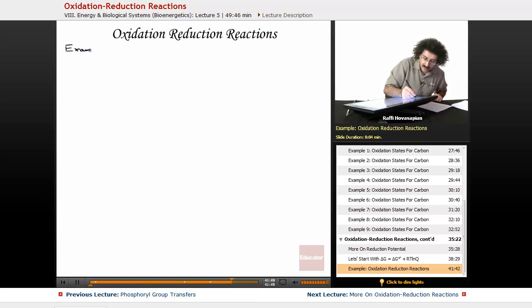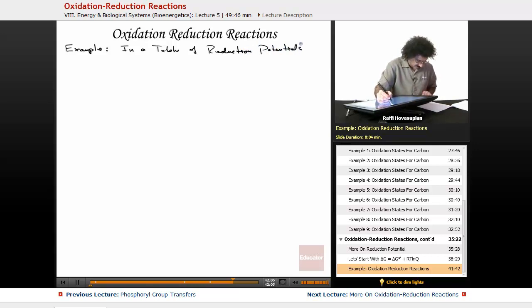Example. That's the best way to make sense of anything is to do examples. So in a table of reduction potentials, we have the following.